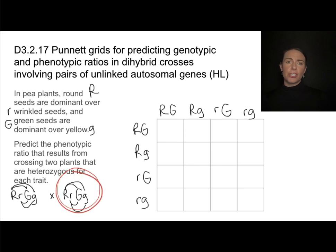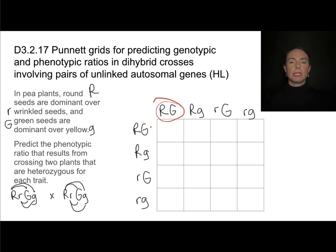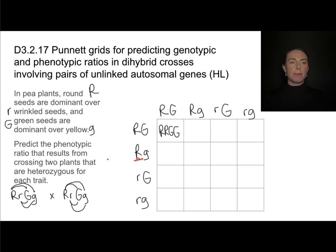Coming up with all the different combinations and saying they're equally likely is an application of independent assortment. When you fill in your dihybrid cross, write the letters for each trait next to each other. For example, crossing big R big G with big R big G gives RRGG. Crossing big R big G with big R little g gives RRGg — and so on and so forth.